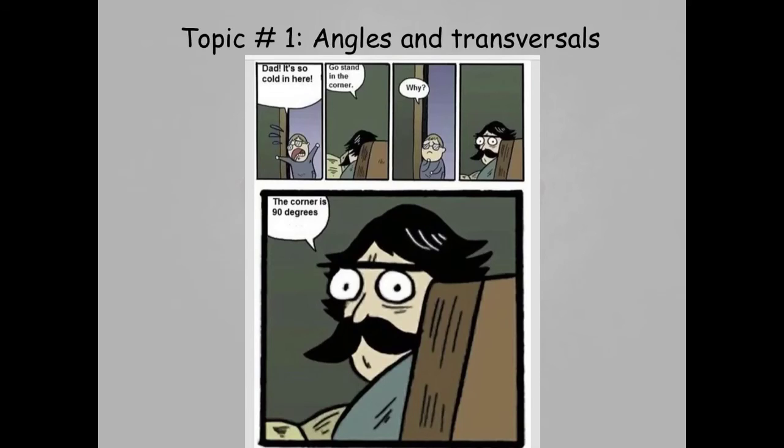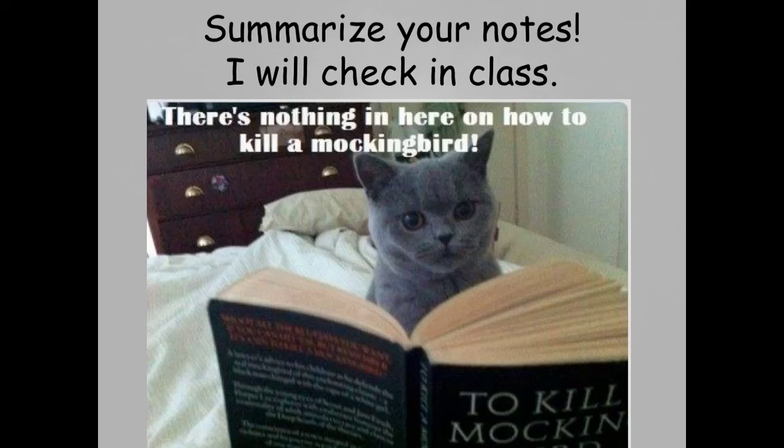And we are down to our last comic. Little boy says, Dad, it's so cold in here. Go stand in the corner. Why? And in this super creepy look of all time, he says, the corner is 90 degrees. It's so funny. You've just learned about 10 FCAT topics. These are probably where you'll see the most of the material on FCAT. Good luck. If you need to, go back and study them. I know you guys are going to rock the FCAT. It's going to be nothing. And I will leave you with this picture. This is especially for you, Briani, because I know you read the book. There's nothing in here about how to kill a mockingbird. So sad. Bye guys. Good luck on the FCAT.